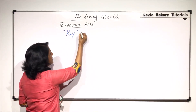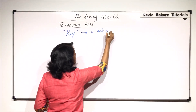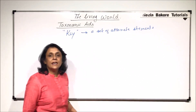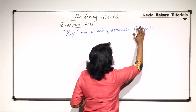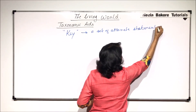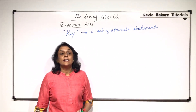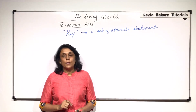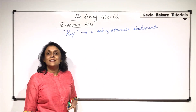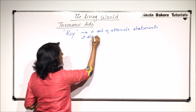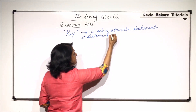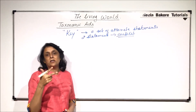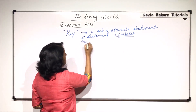Now, what exactly is a key? It is a set of alternate statements. These statements are arranged in such a manner that they help the individual or scientist to reach a particular organism. When we are talking about this alternate set, that means there are two statements. These two statements are known as a couplet. An individual statement of the couplet is known as the lead.